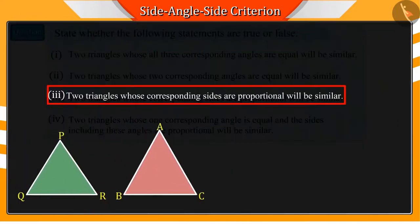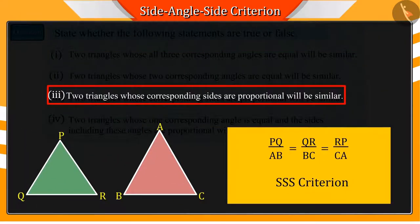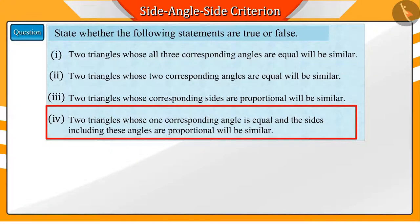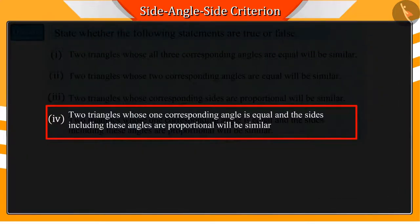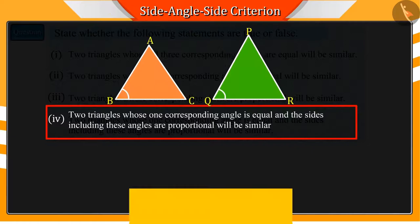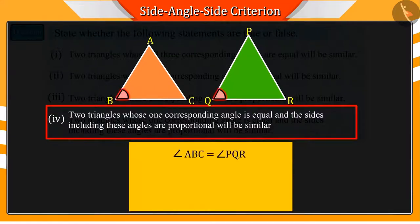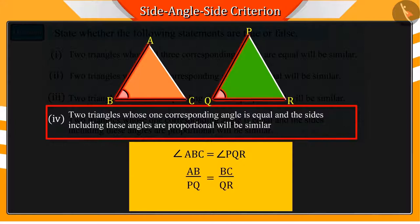Similarly, according to the SSS criteria, statement 3 is also correct. What can you say about the fourth statement? In this statement, it is said that any two triangles whose one corresponding angle is equal and the sides including these angles are proportional will be similar.